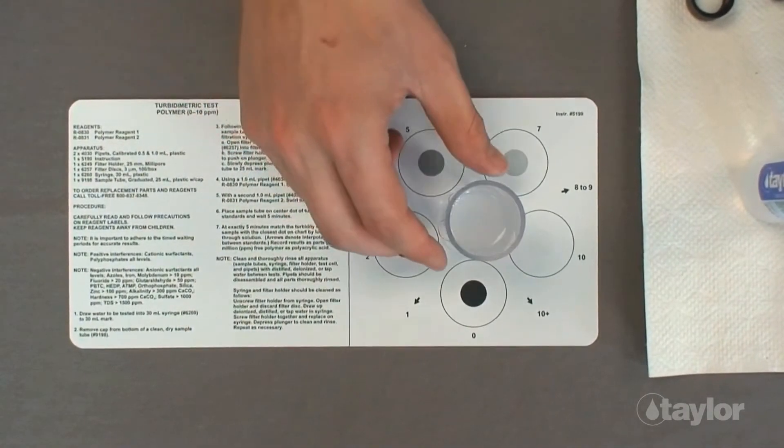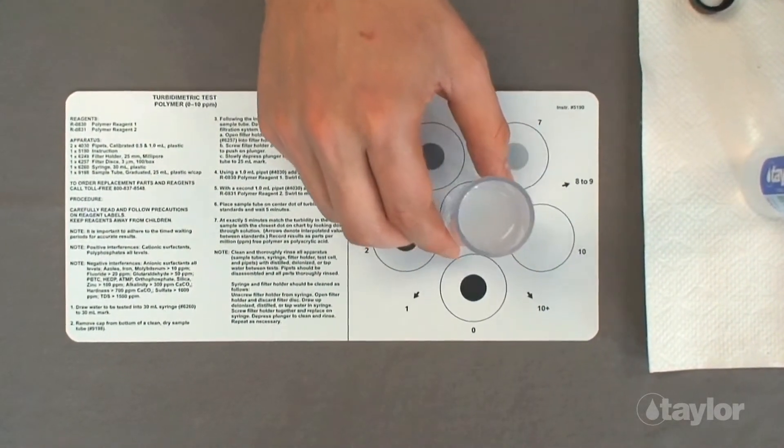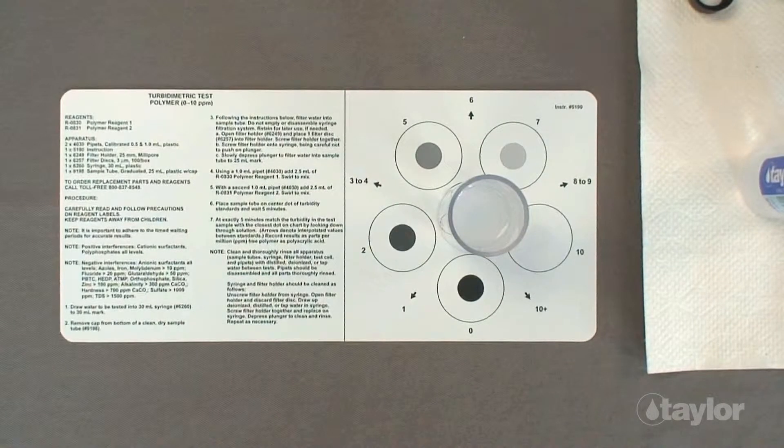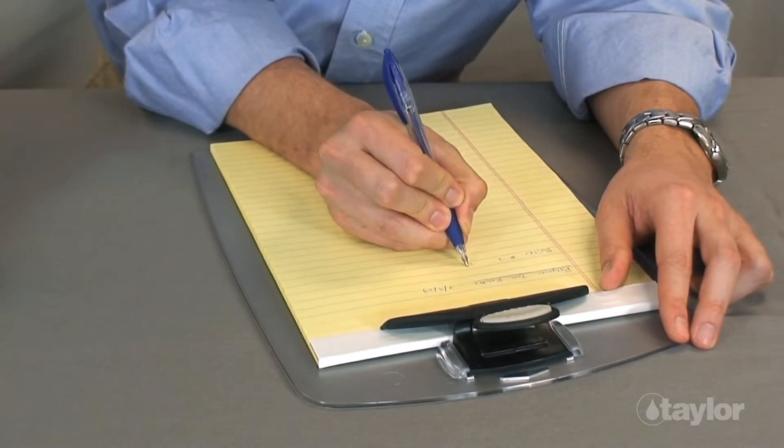At exactly 5 minutes, match what you see when looking straight down through the solution with the closest approximation on the chart. The dot under the sample tube will be partially or totally obscured by cloudiness that has developed in the sample. If the degree of this turbidity appears to be somewhat between two illustrated values, use the interpolated value indicated by the arrow. Record the results as parts per million polyacrylic acid, or PAA.